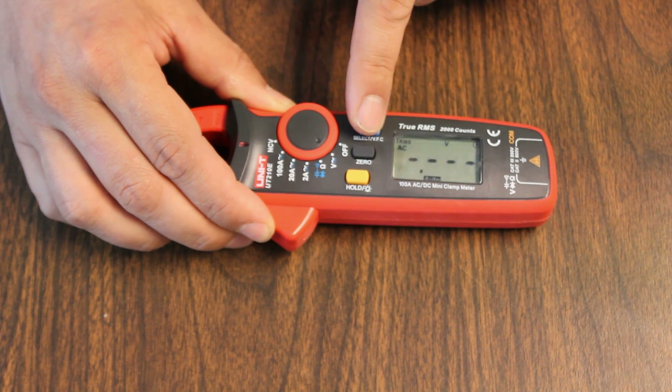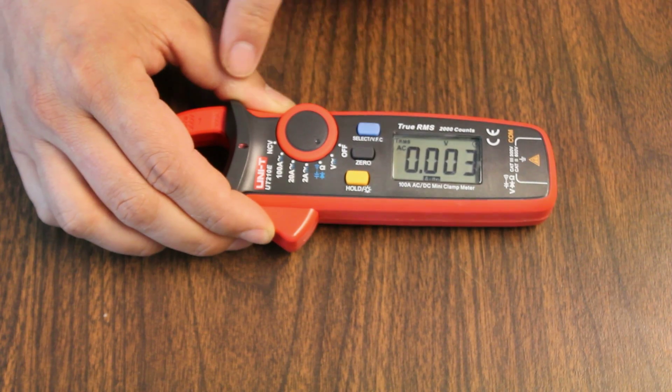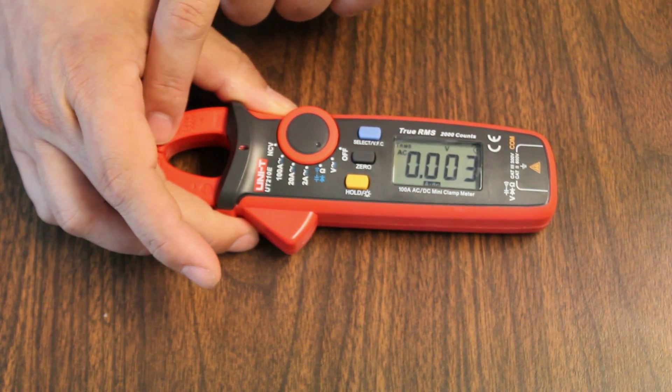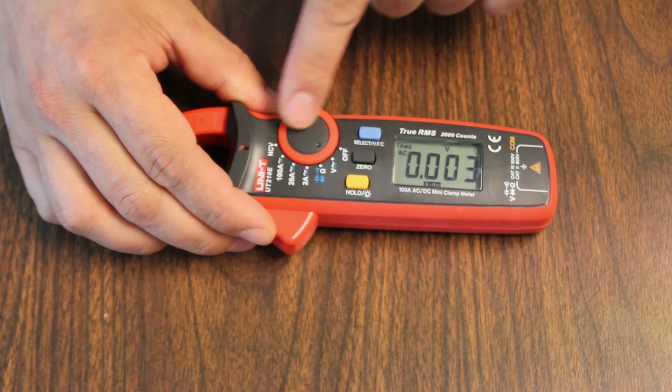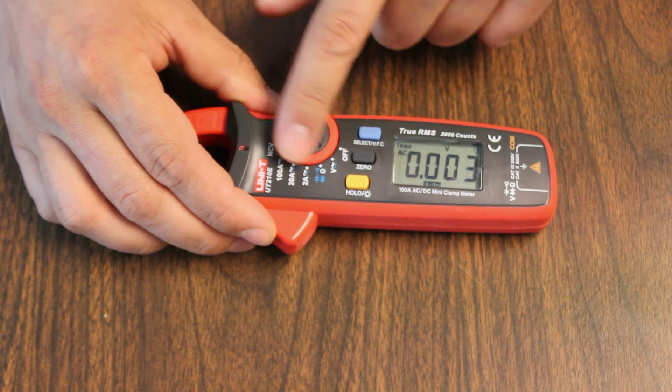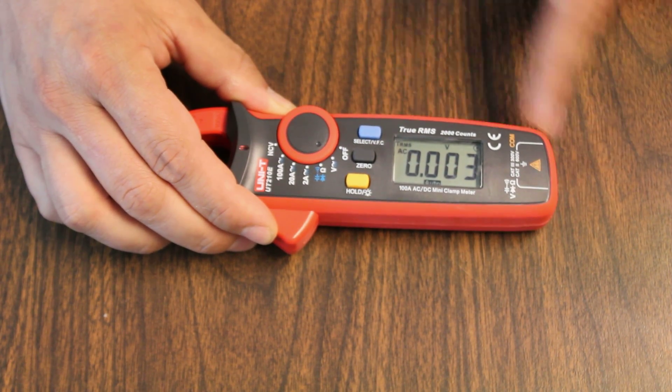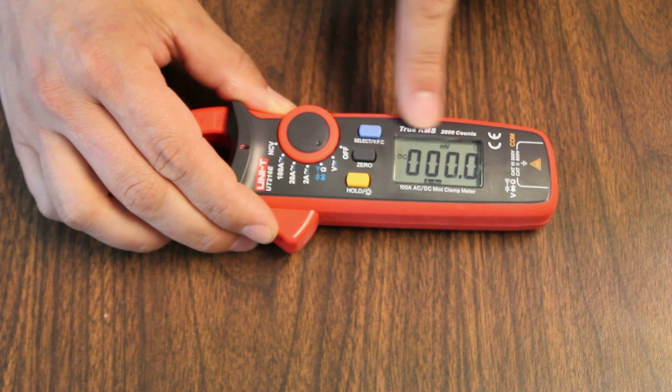It looks like this switch switches between the clamp and whatever this is set to. So this setting is controlling the probes only, and this switch will switch us between them.